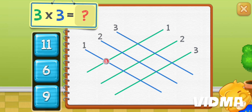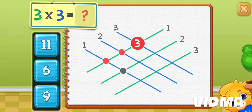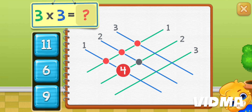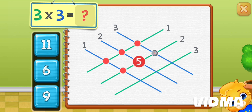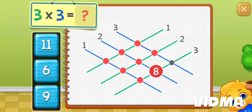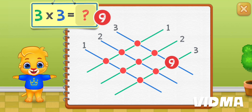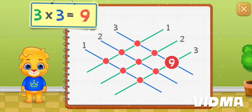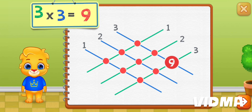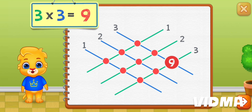One, two, three, four, five, six, seven, eight, nine. Three times three equals nine.